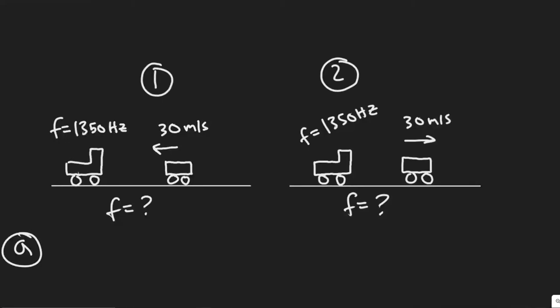Okay, so in this problem, we are told the predominant frequency of a certain firetruck siren is 1,350 hertz when at rest. What frequency do you detect if you move with a speed of 30 meters per second A toward the truck and B away from it?